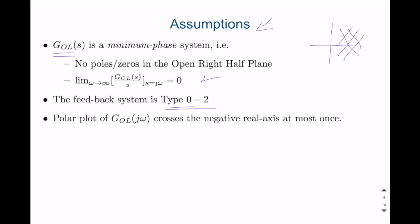But the important thing is the feedback system type should be between 0 and 2. So which means that it can be a type 0 system, no integrator, or it can be a single integrator or we can have double integrator. Which means that triple integrator or four-door integrator is not allowed for this analysis.